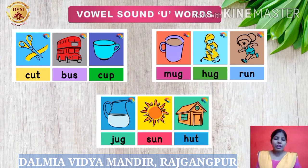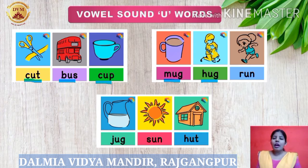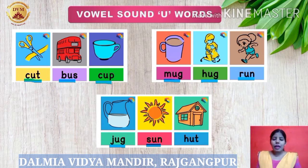Here we have pictures with their names. So the first one is C U T – cut. B U S – bus. C U P – cup. M U G – mug. H U G – hug. R U N – run. J U G – jug. S U N – sun. H U T – hut.